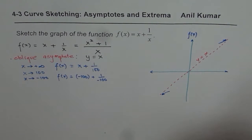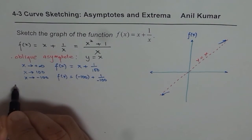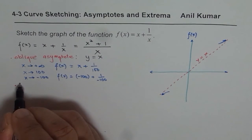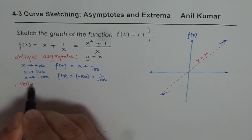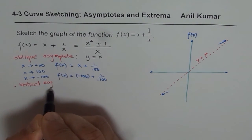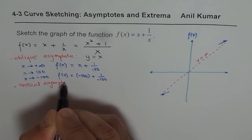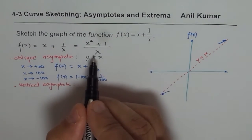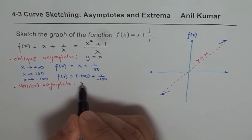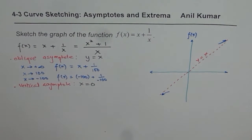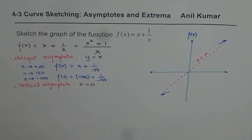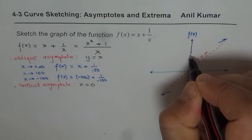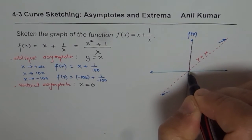Now let us consider the other asymptote. Since x = 0 makes the denominator zero, we have a vertical asymptote at x = 0, which is the y-axis. Let me draw a dotted line indicating that vertical asymptote.